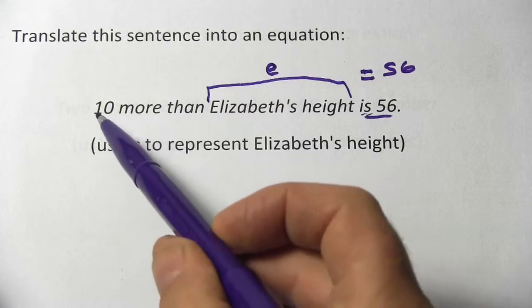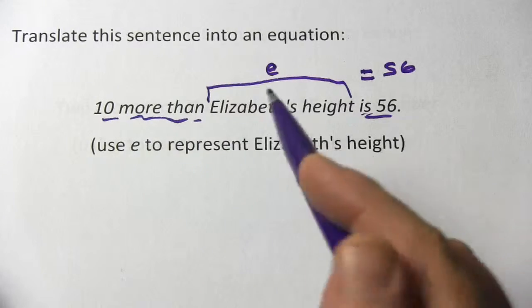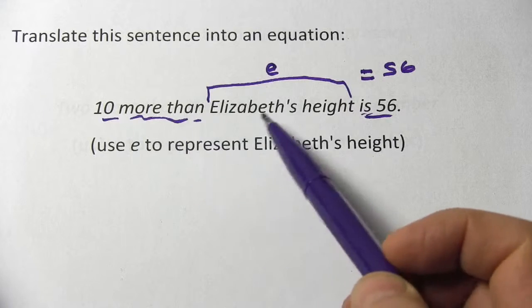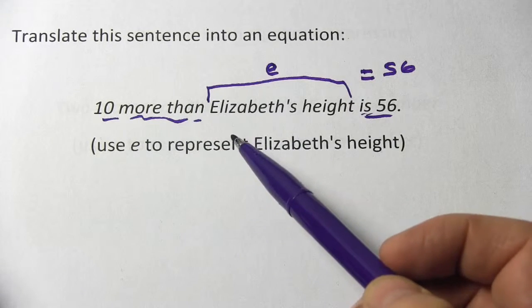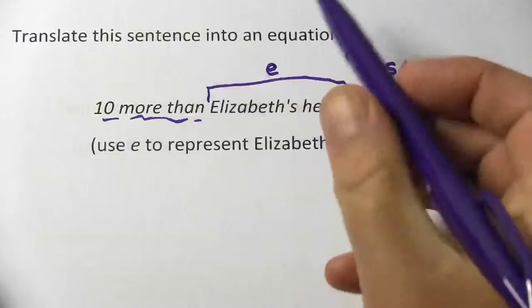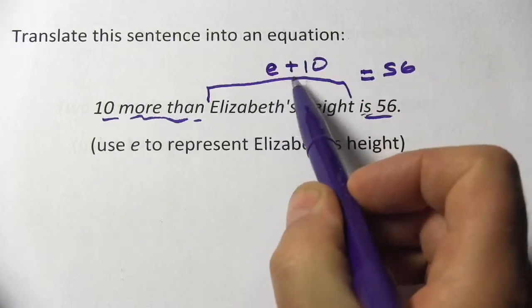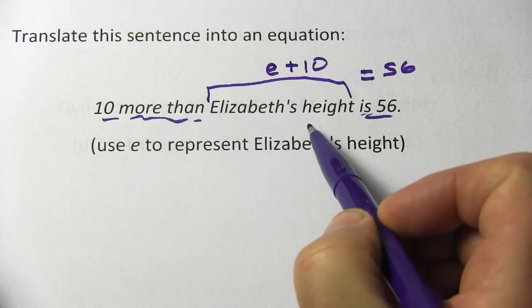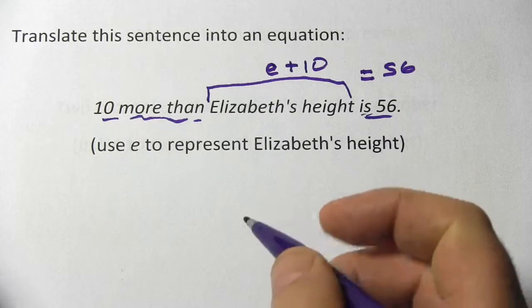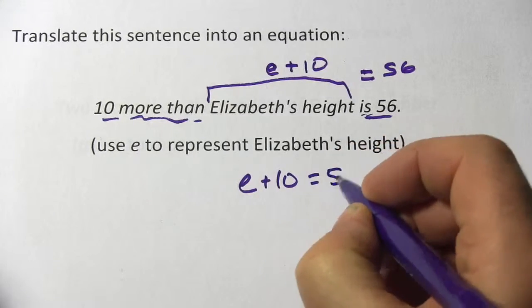The only thing we haven't dealt with is '10 more than.' Well, 10 more than Elizabeth's height is what we need. How do you make something be 10 more than it is? You add 10 to it. So if we add 10 to E, that's 10 more than E — 10 more than Elizabeth's height. So our whole equation is just E plus 10 equals 56.